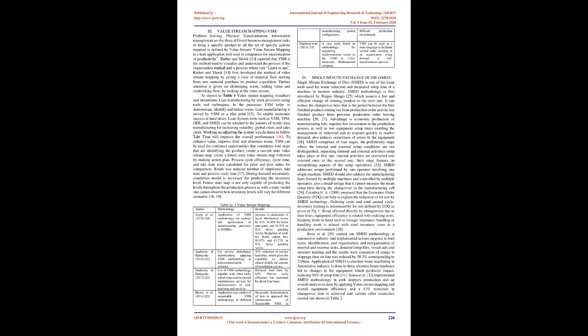Working on adjusting system cycle times to follow takt time will improve overall performance. To enhance value, improve flow, and eliminate waste, VSM can be used for continued opportunities through four steps: identifying the product, creating a current state value stream map, creating a future state value stream map, and making an action plan. Process cycle efficiency, cycle time, and takt time were calculated for prior and post states. Results showed a reduced number of employees, takt time, and process cycle time. During demand uncertainty, a simulation model is necessary for predicting inventory levels.